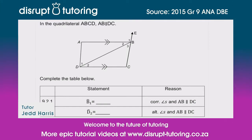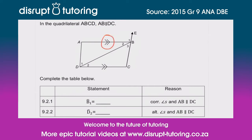Hey guys, it's Jed here from Disrupt Tutoring, and as always it's such a pleasure to join you today. We're going to deal with some parallel sides. In the quadrilateral ABCD, they've specifically told us that AB is parallel to DC, and they've already marked that on AB and DC.